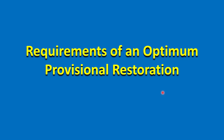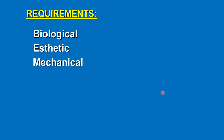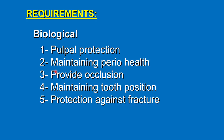Requirements of an optimum provisional restoration are mainly categorized in three main groups: biological, aesthetic, and mechanical. The biological requirements include: pulpal protection, maintaining periodontal health, providing occlusion, maintaining tooth position, and protecting against fracture.